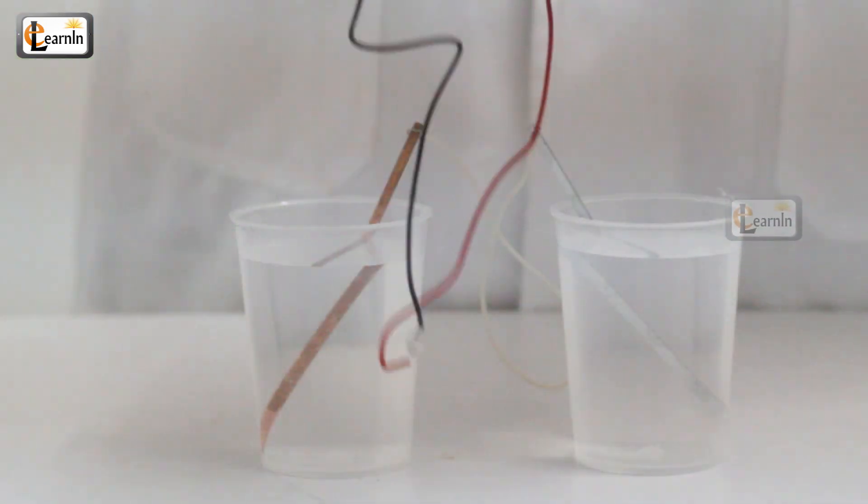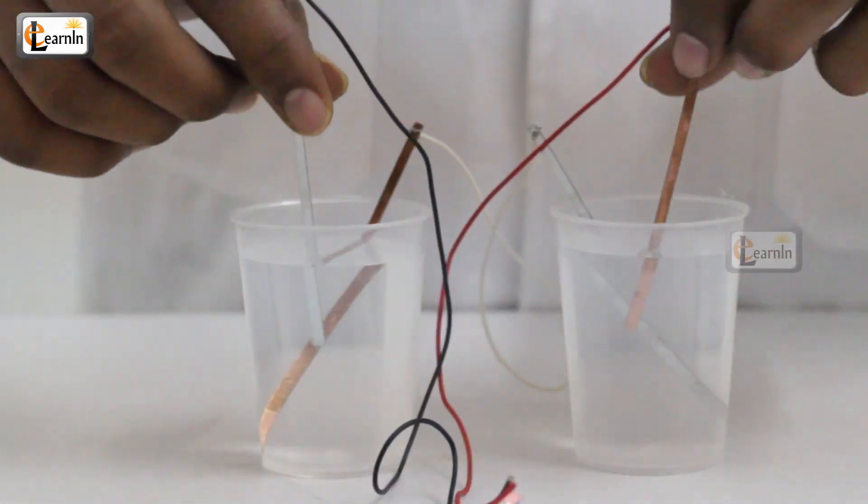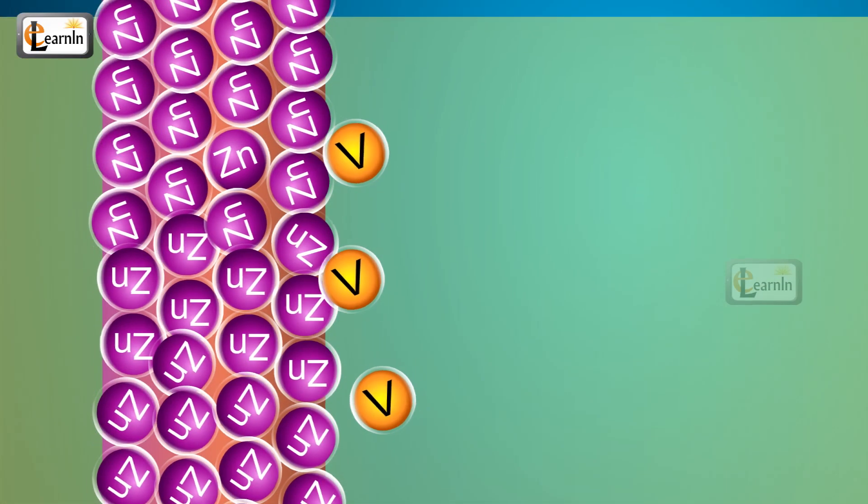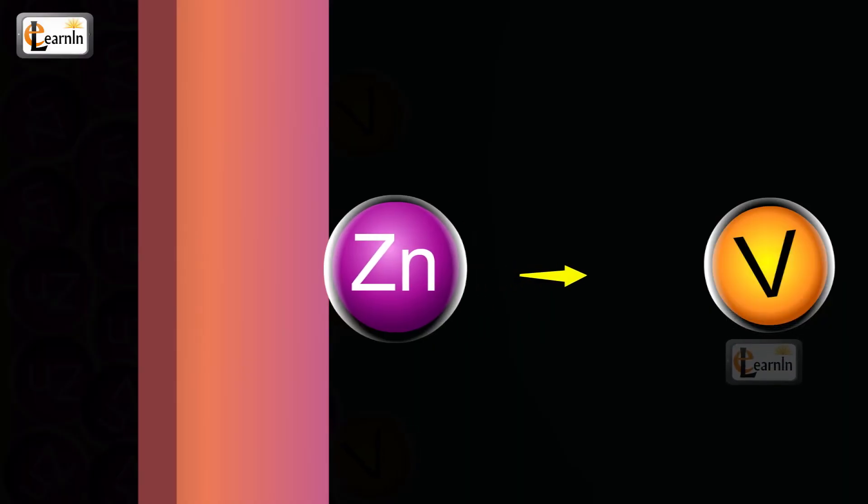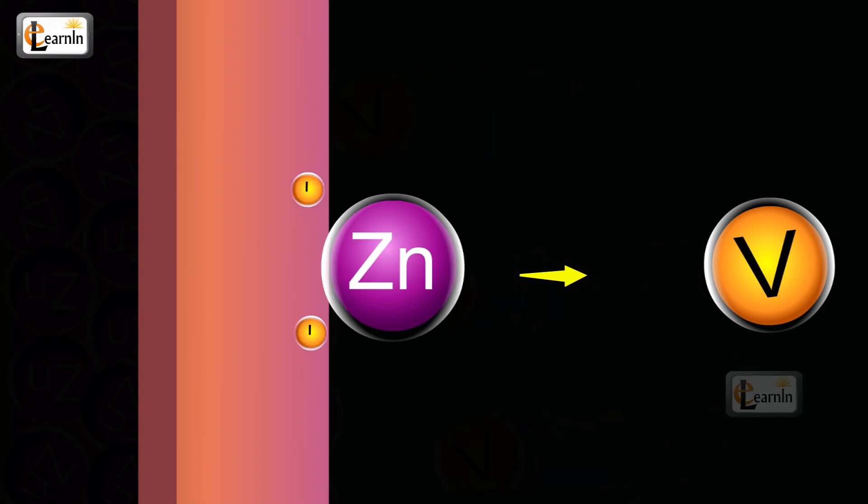When you place a strip of metal in a glass of vinegar, the vinegar molecules interact with the metal atoms on the surface of the strip. At the interface between the vinegar and the metal, some of the metal nuclei are attracted to the negative sides of the vinegar molecules.